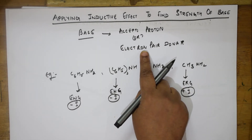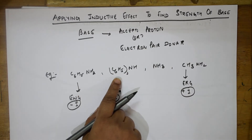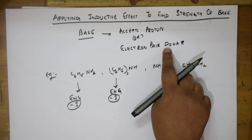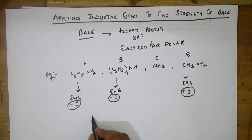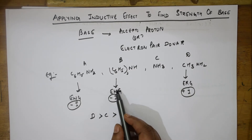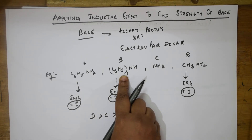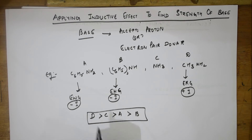When a group is electron-releasing, it means it is an electron pair donor, so it has higher basicity. Electron-releasing group means plus-I effect means electron pair donor means highly basic. So the order: d (methylamine) > c (ammonia) > a (aniline, one aromatic ring) > b (diphenylamine), which is least basic because it withdraws electrons and does not allow electron release.